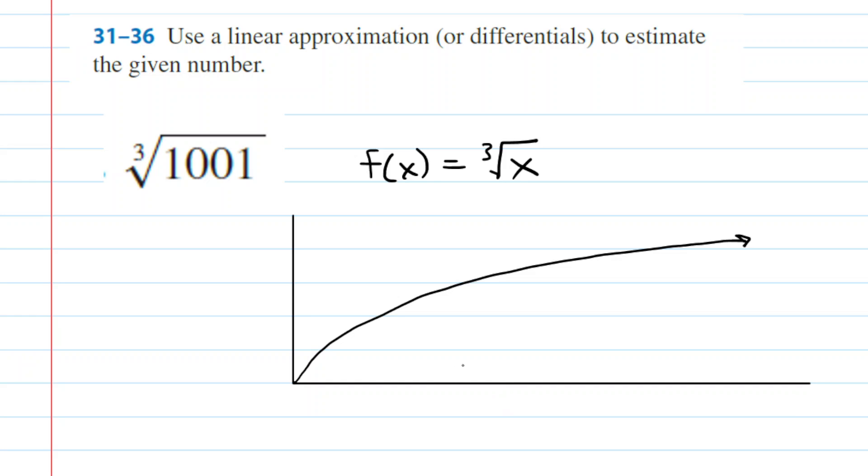Now of course, this is by no means a to-scale drawing of the function, but that doesn't really matter for our purposes. What we need is a point on the graph of our function f(x). To find that point, you go back and look at that 1001, and you ask yourself, what round number is very close to 1001? And of course 1,000 is close to 1001. That's a nice round number.